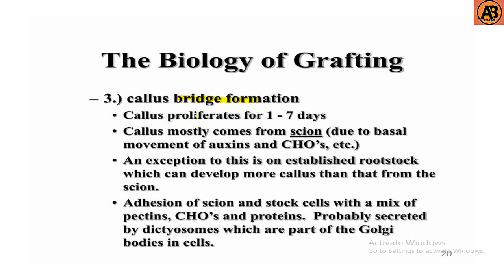The third step is callus bridge formation. Callus proliferates for one to seven days, mostly from the scion due to the basal movement of auxins and carbohydrates. An exception is an established rootstock, which can develop more callus than the scion. Adhesion of scion and stock cells occurs through a mix of pectins, carbohydrates, and proteins, probably secreted by dictyosomes, which are part of the Golgi bodies in cells.